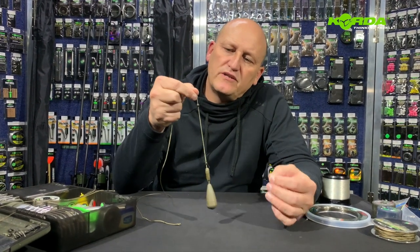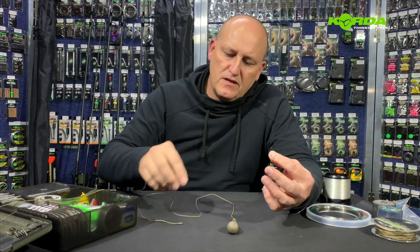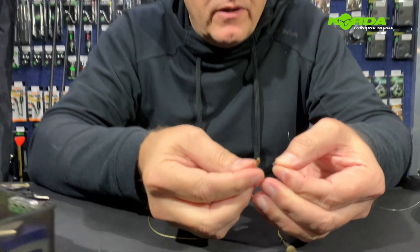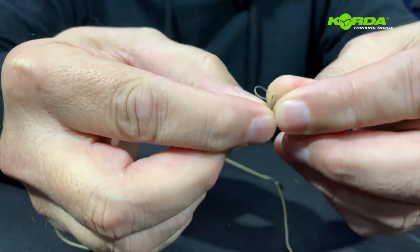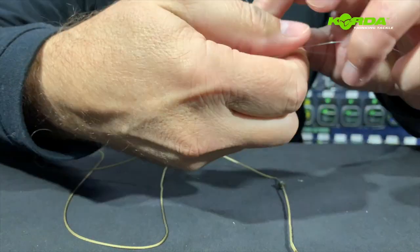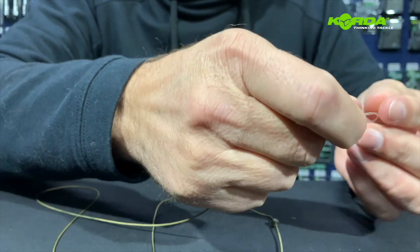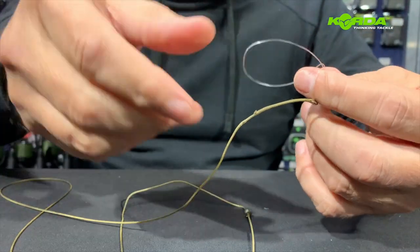The next system I'm going to attach directly to my fluorocarbon mainline is the helicopter lead system. And again, I'm going to use a polymer knot. I'm folding the line double, I push it through the splice loop like that, and I make a granny knot like that and I trap it with my forefinger.